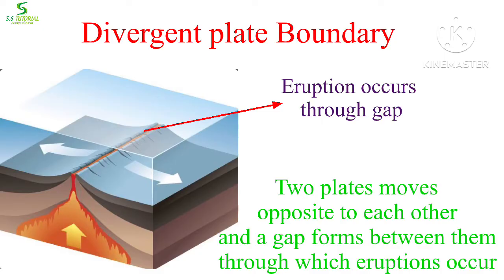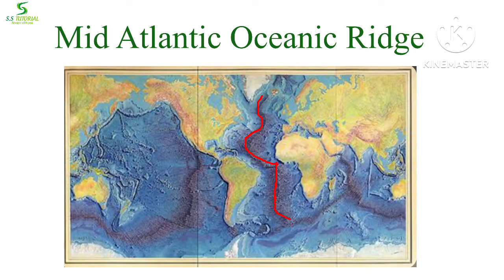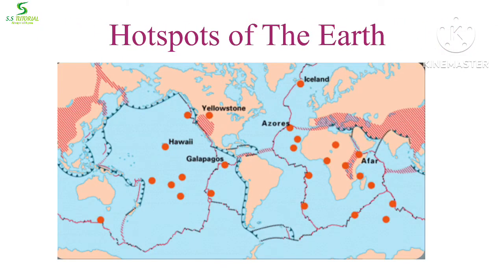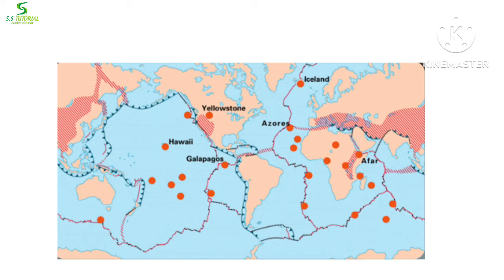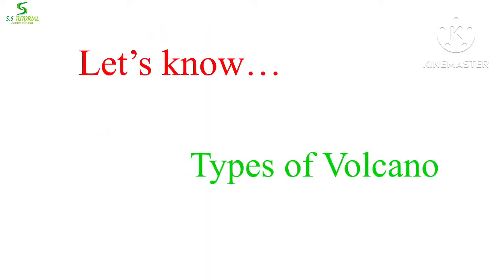A divergent plate boundary is an area where two plates move opposite to each other. As a result, a gap is made between them from which magma comes out and creates new crust. Divergent plate boundaries are mostly seen in the ocean — the mid-Atlantic oceanic ridge is one of the most appropriate examples. Hot spots are areas where magma is excessively hot compared to the surrounding area, giving pressure on the earth's crust and creating openings through which volcanic eruption occurs.